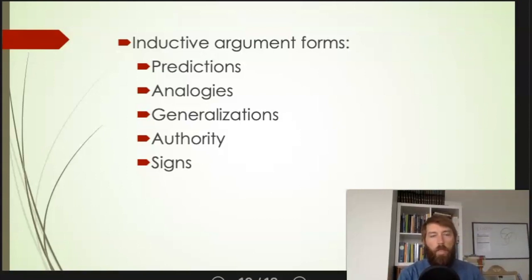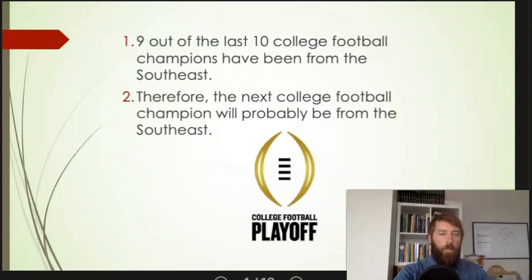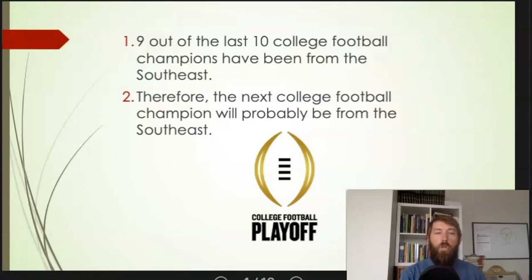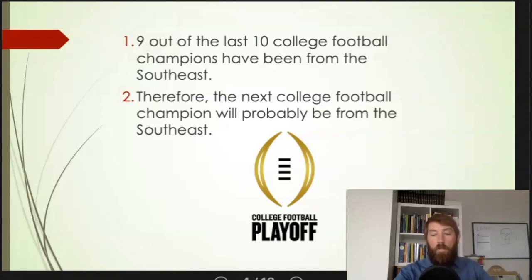One final thing: the book describes another way of determining whether an argument is inductive or deductive, based on the amount of information found in the argument. In an inductive argument, the conclusion gives you new information that is not found in the premises. For example, our premise tells us what's happened in the past, and our conclusion tells us what's going to happen in the future — the conclusion gives us information not found in the premises alone. This is typical of an inductive argument.